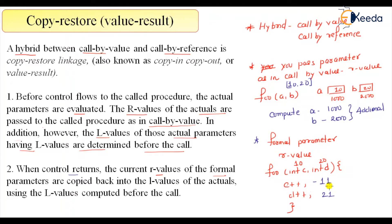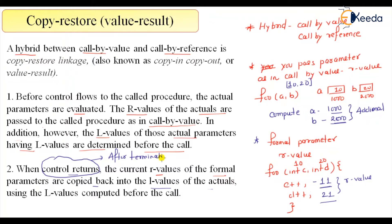When the control returns, the R-values of C and D — which are both R-values — are copied back to the L-values of the actuals. So the locations 1000 and 2000 that we computed earlier will receive these values. After termination of the function, A will no longer be 10 and B will no longer be 20; they will become 11 and 21 respectively.